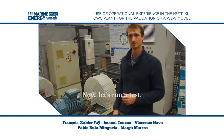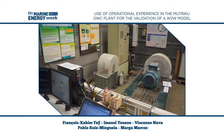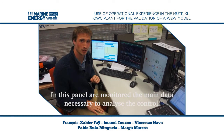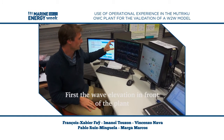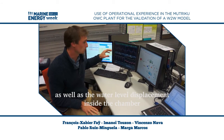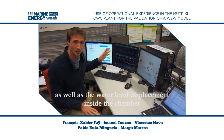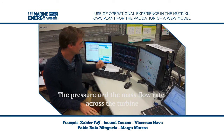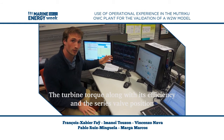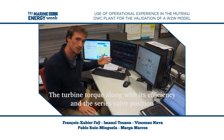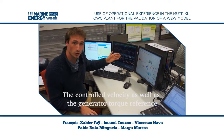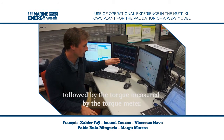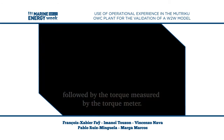Now let's run a test. In this panel, I monitor the main data necessary to analyze the control: first, the wave elevation in front of the plant, as well as the water levels inside the chamber, the pressure and the mass flow rate across the turbine, the turbine torque along with its efficiency and the series valve position, the control velocity, the generator torque reference, and the torque measured by the torque meter.